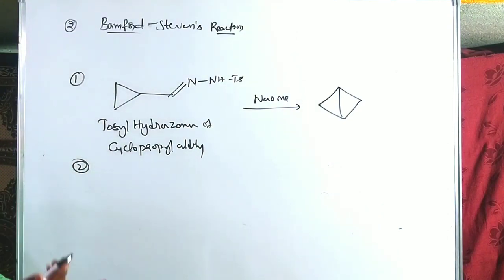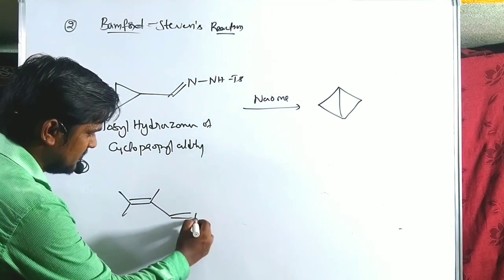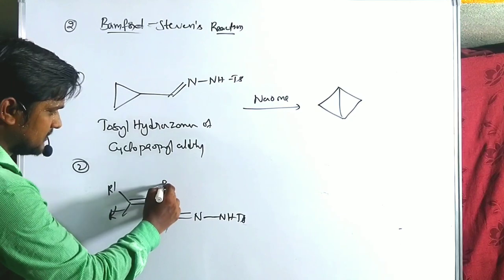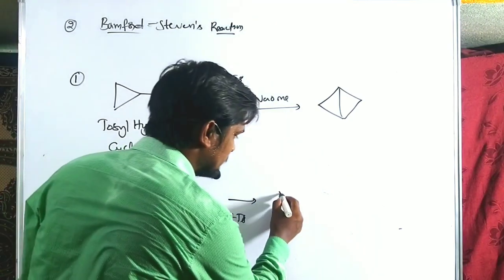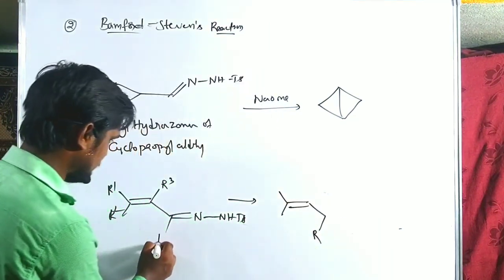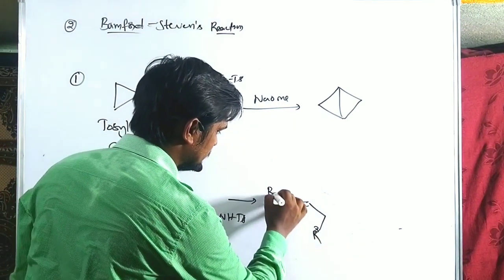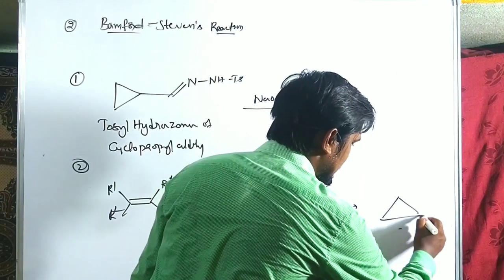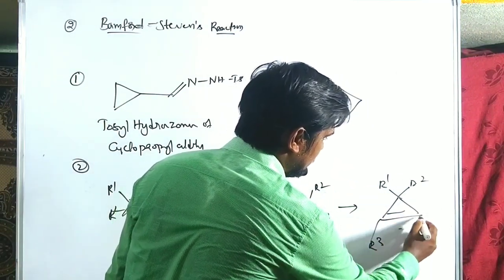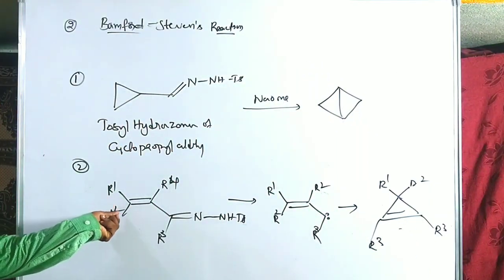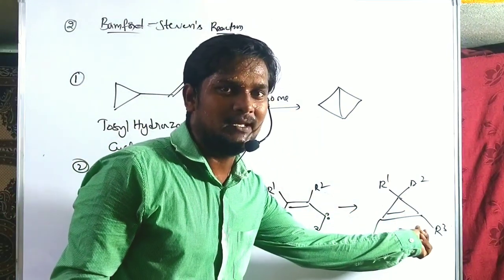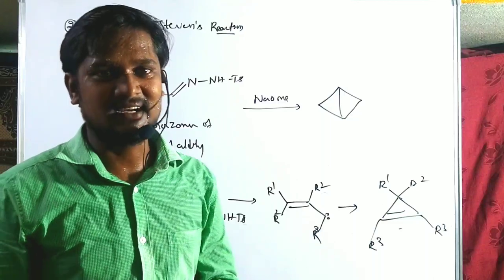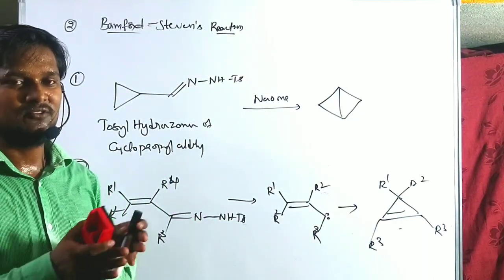The second exceptional case: alpha-beta unsaturated tosyl hydrazones (with substituents R1, R2, R3) give a cyclopropyl product through a vinyl carbene intermediate. Through the vinyl carbene intermediate, the cyclopropyl product is formed with substituents R1, R2, R3, R4. These are the exceptional cases of the Bamford-Stevens reaction. Don't forget to subscribe to the channel and share it with your friends. Thank you for watching.